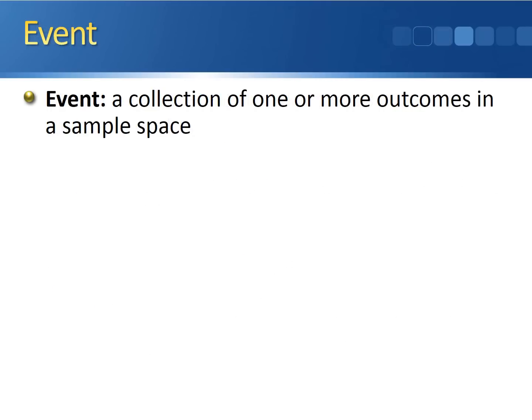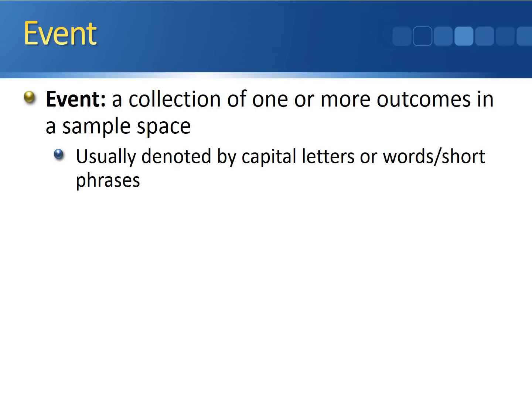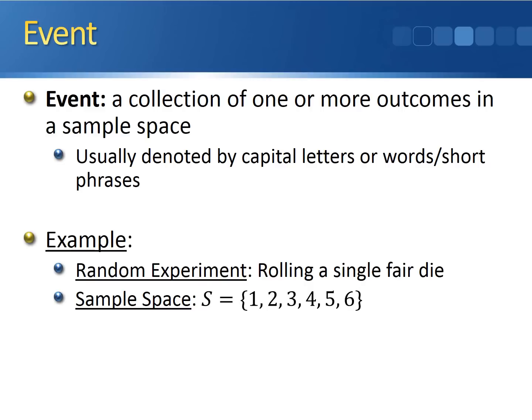The next term we need to define is an event. An event is a collection of one or more outcomes from a sample space. Events are generally denoted either by capital letters or by words or short phrases that summarize the event. For our example of rolling a fair die, an event might be rolling an even number. Rolling an even number consists of the outcomes two, four, and six — a collection or subset of your sample space — and combining those outcomes into one creates an event.